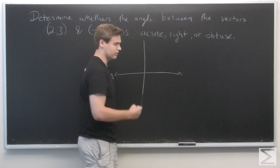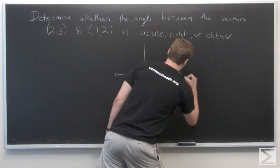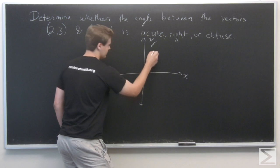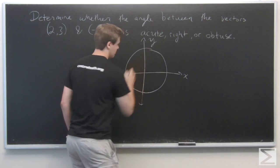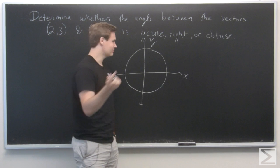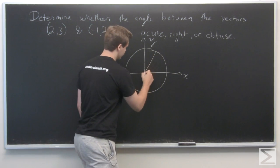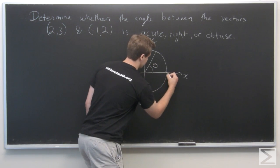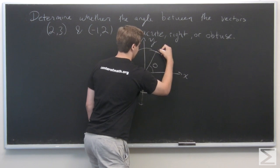So for the case of R2, x, y, we'll draw the unit circle just so we can have our angles. So this is theta, and then this is v, w.